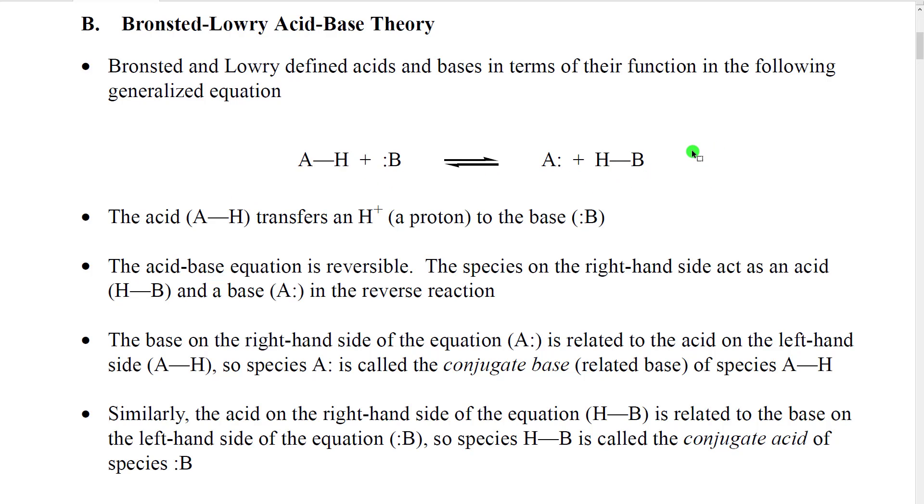And so what they did was they gave these species names. They said on the left hand side of the equation we would have an acid. When the acid reacts it becomes a related or conjugate base. On the left hand side we would have a base. When it reacts it would become a related or conjugate acid. The important thing to note here is that although we use the terms conjugate base and conjugate acid for the species on the right hand side of the equation there's nothing special about them they are just an acid and a base.